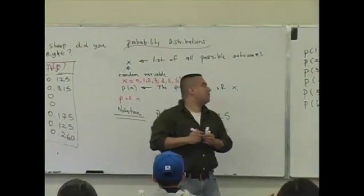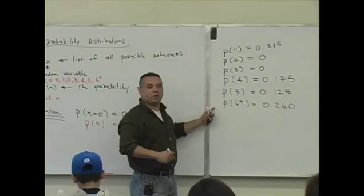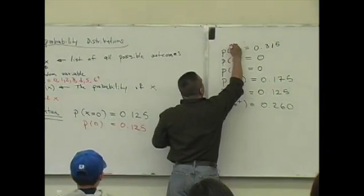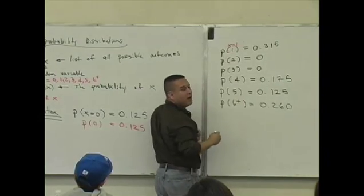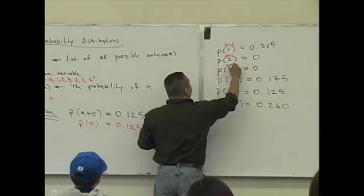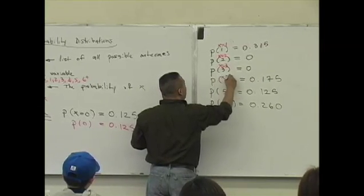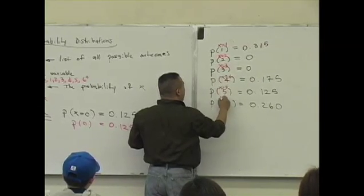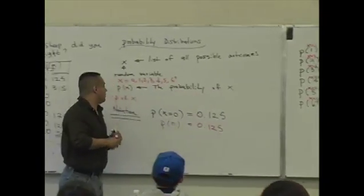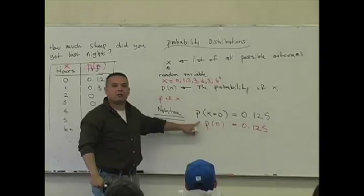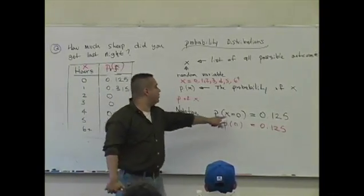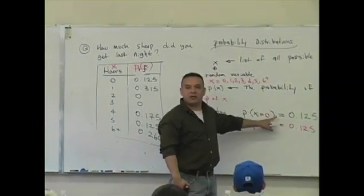So that's how this notation works. I didn't write down every step — the probability that X equals one, X equals two, X equals three, X equals four, X equals five, X equals six or more — it's implied. Sometimes when you read the book and you see these two equal signs, don't be discouraged because it's just notation.